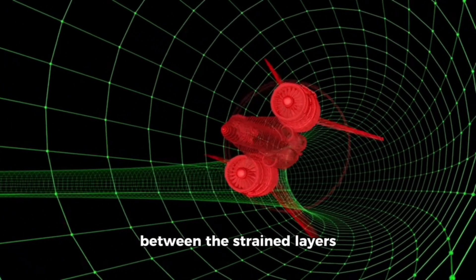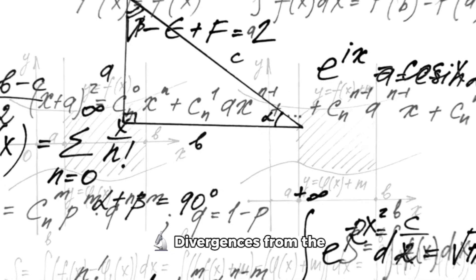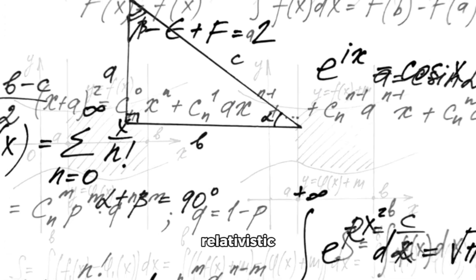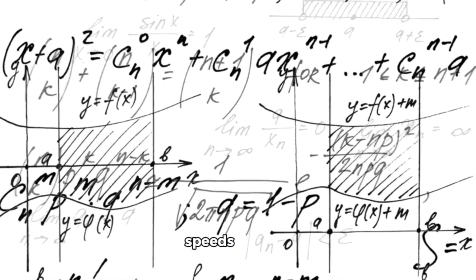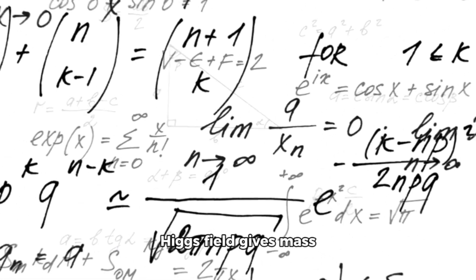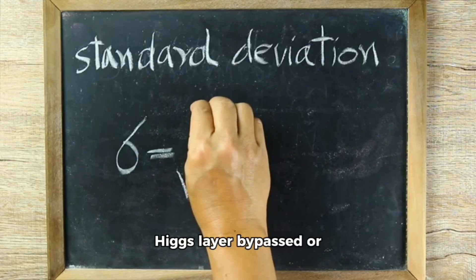Divergences from the Standard Model: Time dilates at relativistic speeds. Time halts beyond light speed in null space. Higgs field gives mass by interaction. Higgs layer bypassed or nullified in envelope.